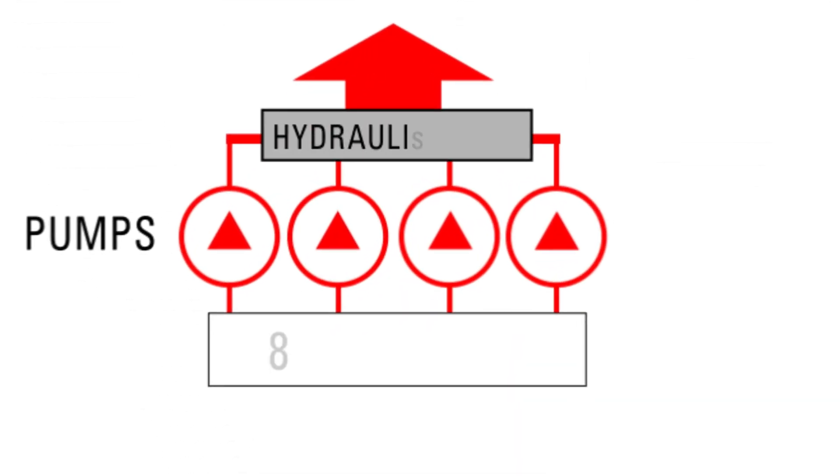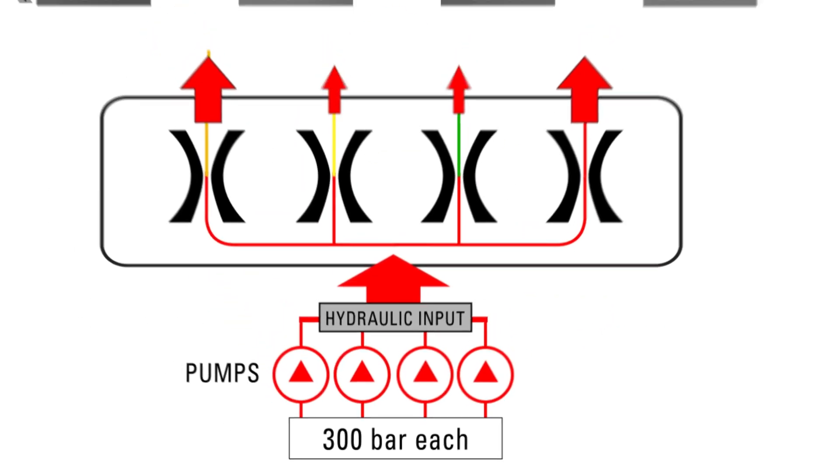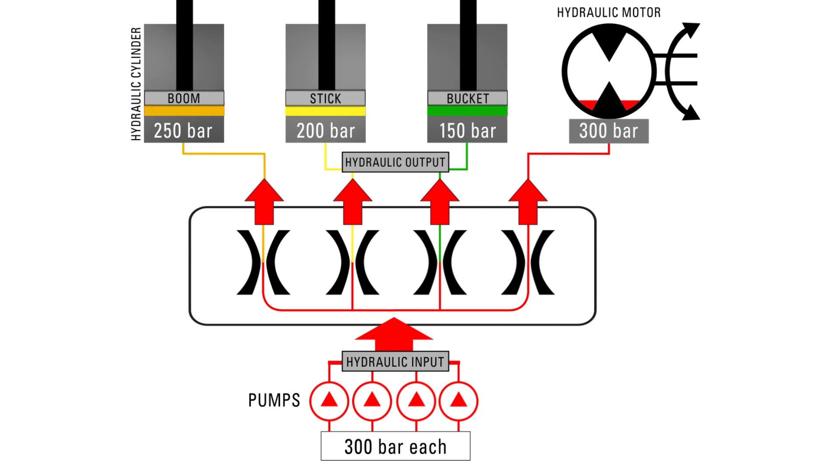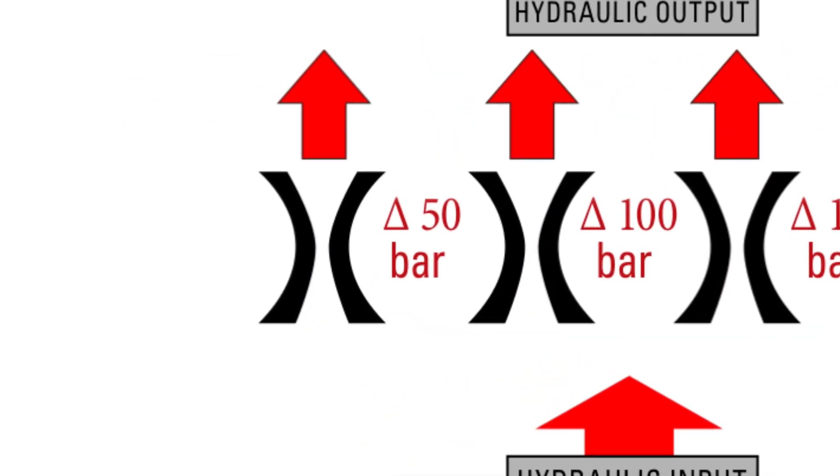But conventional hydraulic systems operate all pumps at the maximum required cylinder pressure, regardless of the cylinder's demand, and that can cause a lot of metering loss, excess heat, and waste.